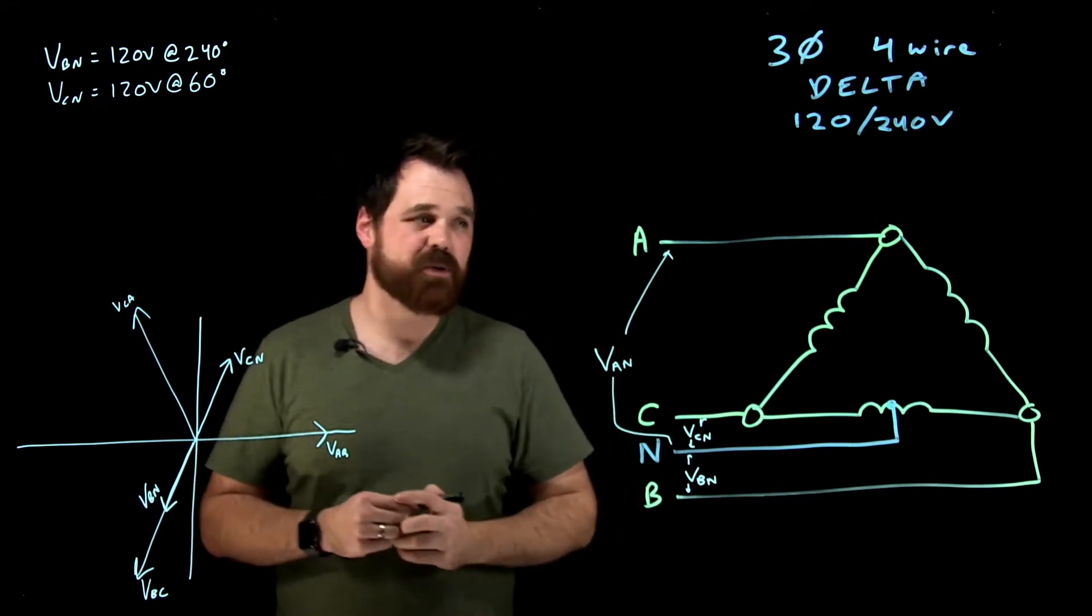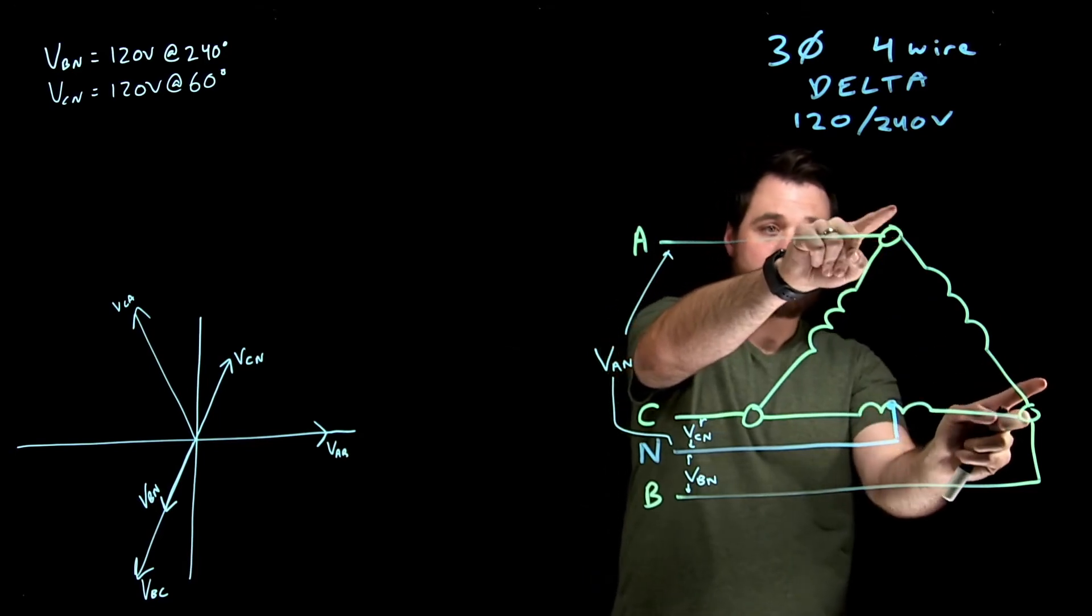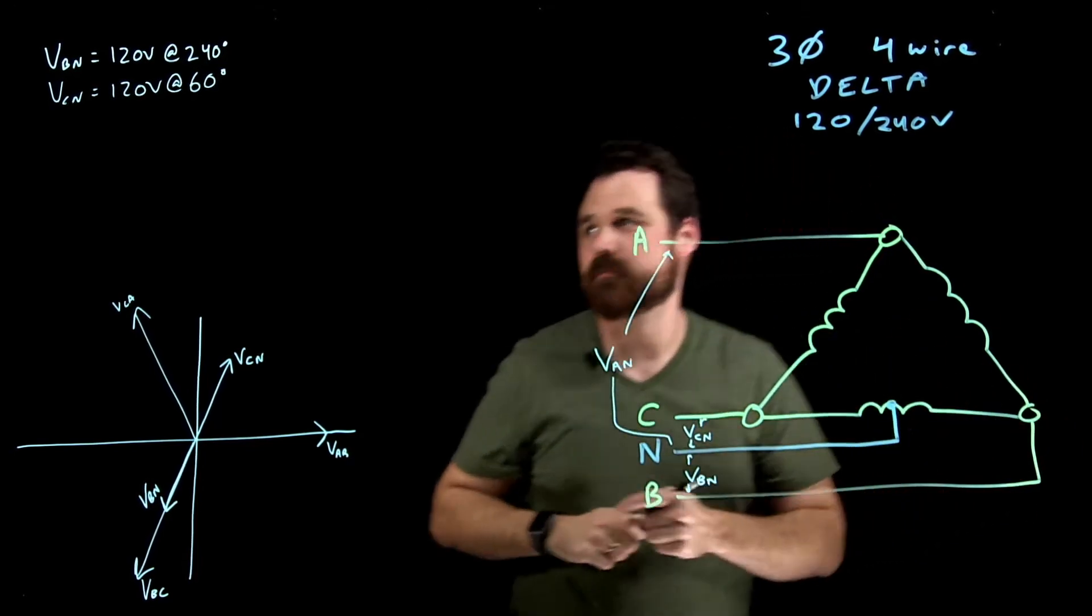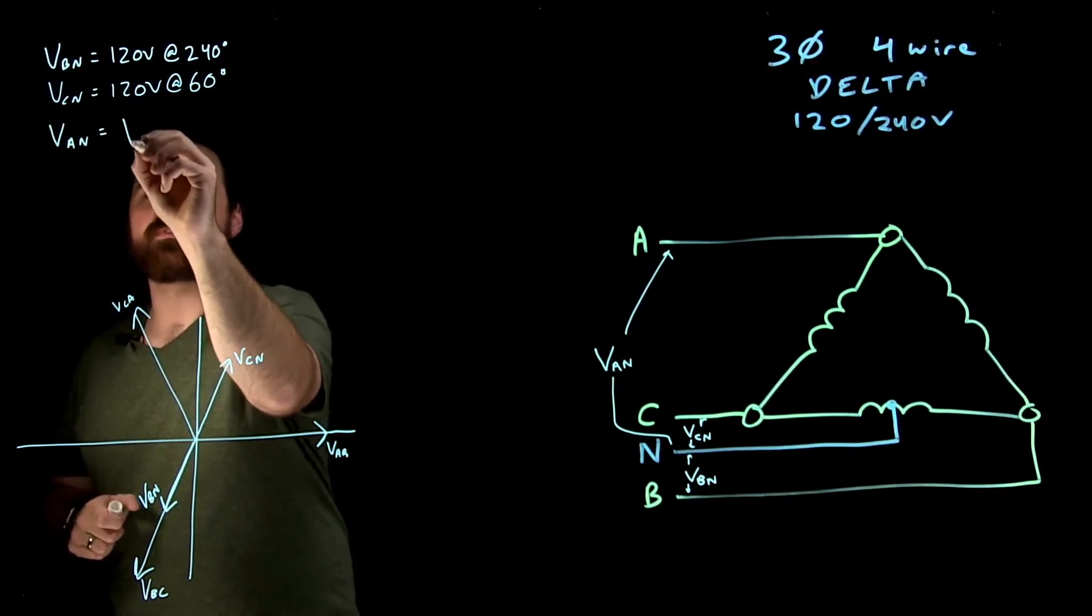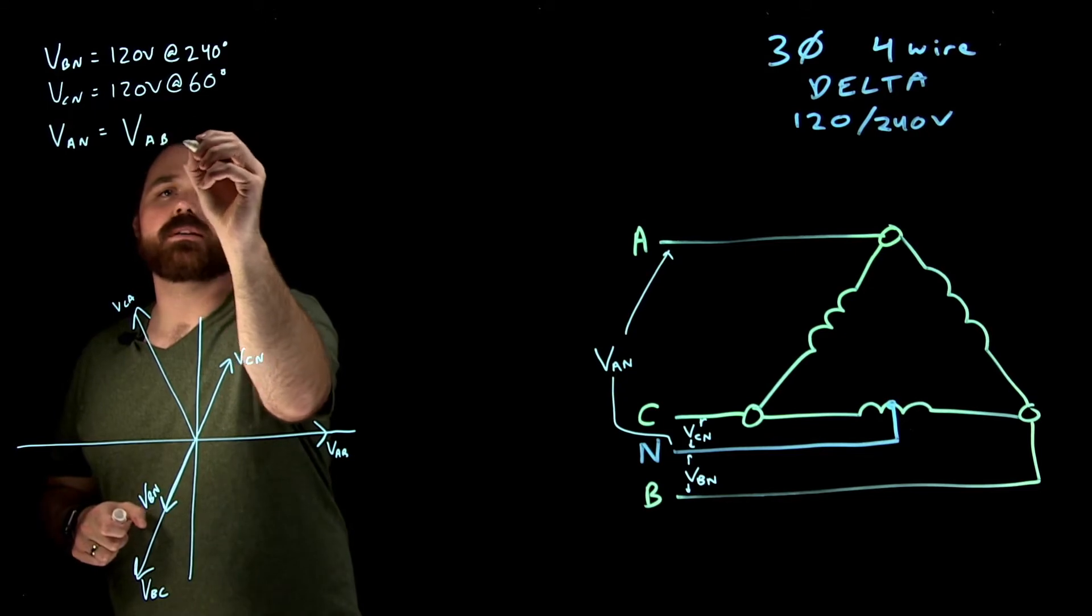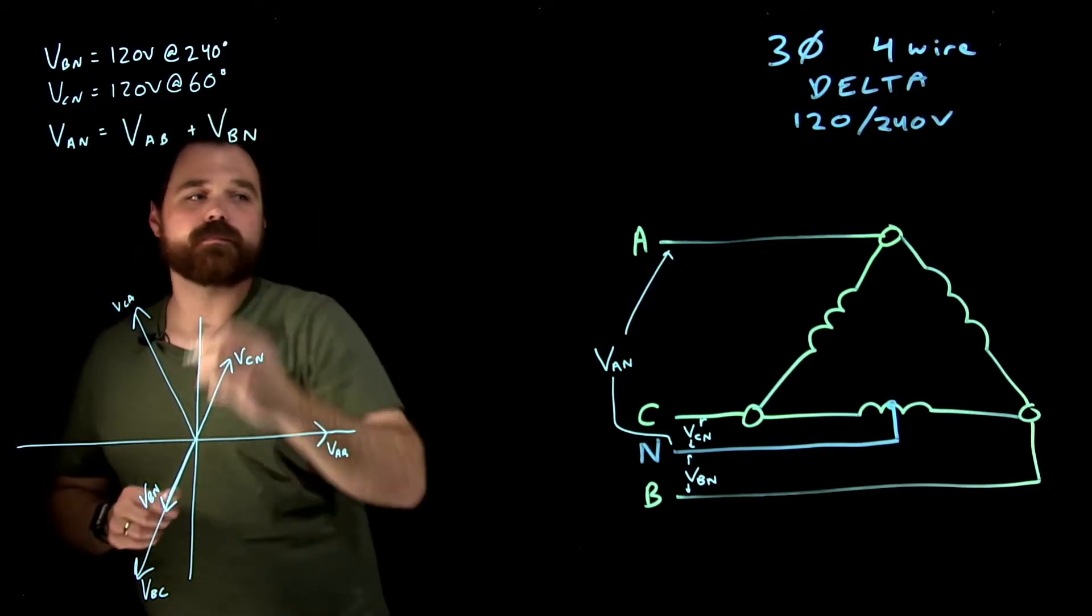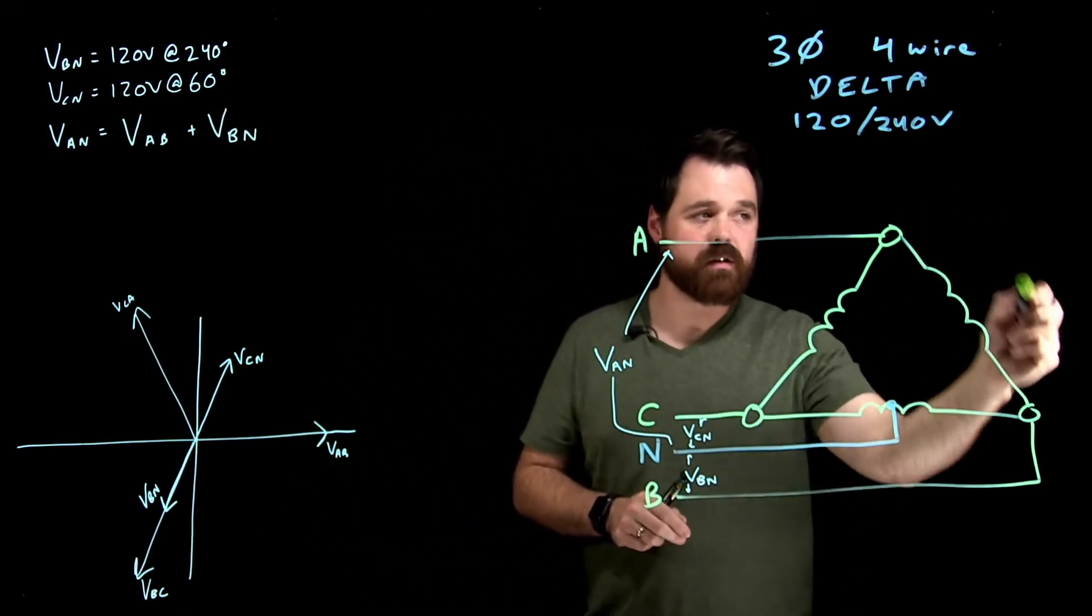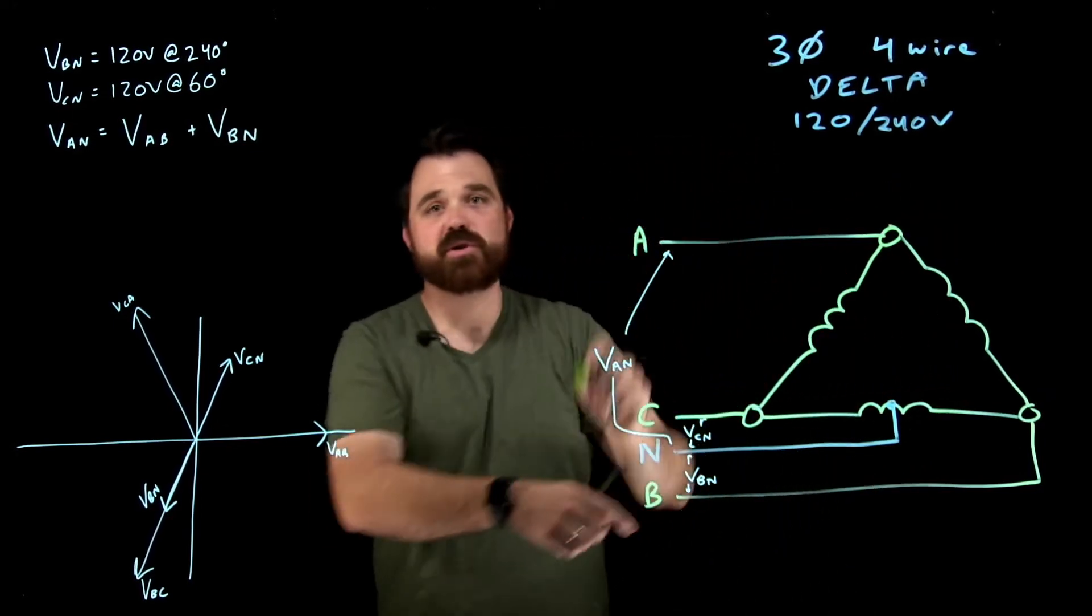Well, let's talk about that for a sec. So VAN would be A to B plus B to N. So VAN would equal VAB plus VBN. Again, we're going A to B plus B to N, and we're measuring those two points.